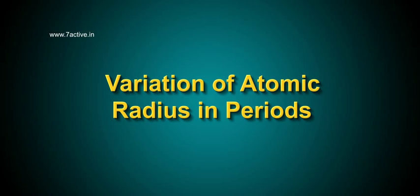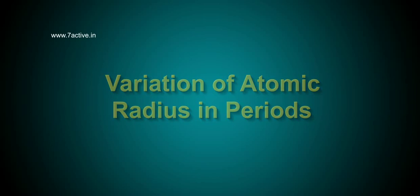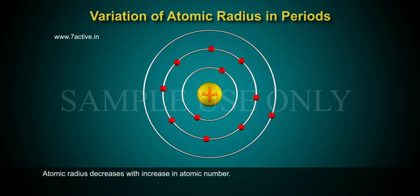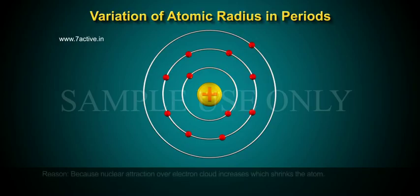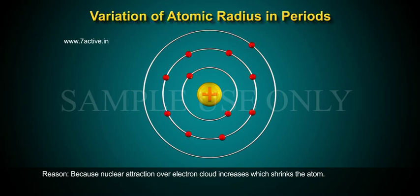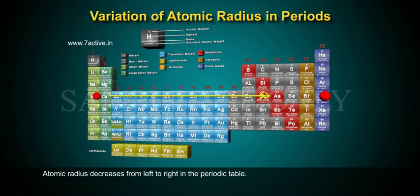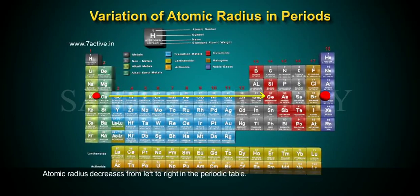Variation of atomic radius in periods: Atomic radius decreases with increase in atomic number because nuclear attraction over electron cloud increases, which shrinks the atom. Atomic radius decreases from left to right in the periodic table.